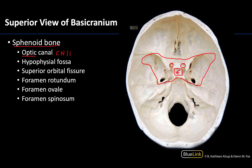Now let's move to the foramina and fissures, which also help us understand how the divisions of the trigeminal nerve exit. The first is the superior orbital fissure — by far the most difficult to locate. It's just inferior to the lesser wings, and you can see a little bit of it right here. It is considerably larger than the rest of these foramina because more structures pass through it, and everything traversing this region communicates with the orbit.